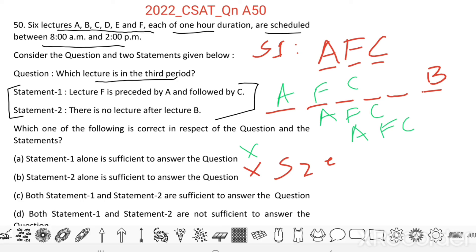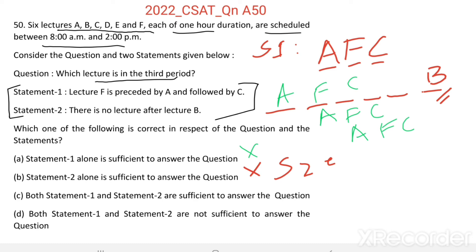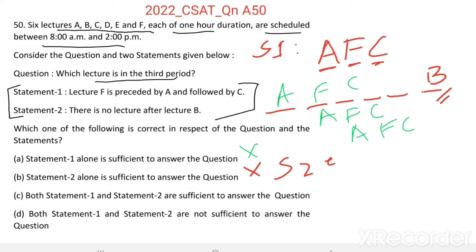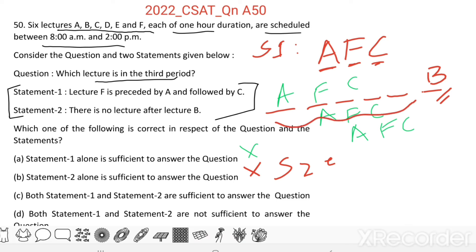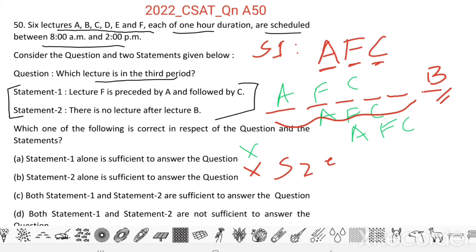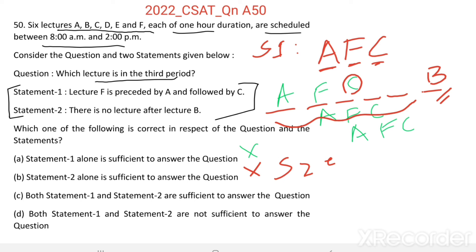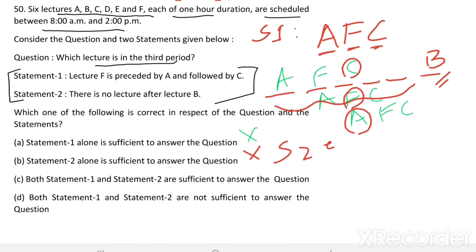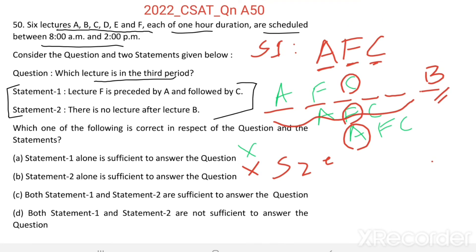Now based on both statements together: the second statement tells us the last lecture is B, and the first statement tells us we can place A, F, C anywhere in the remaining five periods. We have seen it can be either C, or F, or A in the third period. So even after combining these two statements, we could not answer which lecture is in the third period precisely. Therefore, both statement one and statement two together are not sufficient to answer the question.